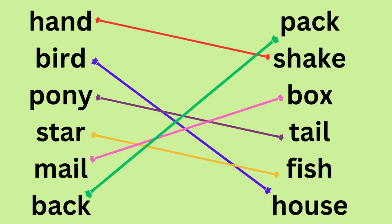Compound word answers for page two are: handshake, birdhouse, ponytail, starfish, mailbox, backpack.